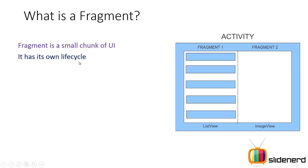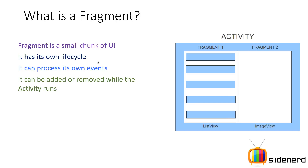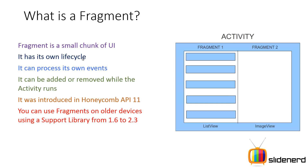Fragments have their own life cycle, and just like activities they have a mini life cycle as well. They can process their own events and can be added or removed while the activity runs — dynamic changes to the user interface can happen right when the activity is running. They were introduced in Honeycomb API 11. You can also use fragments on older devices from 1.6 to 2.3 using a support library that we'll be discussing further in this video.